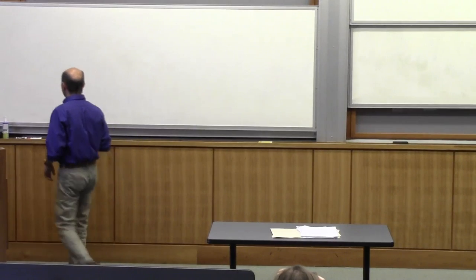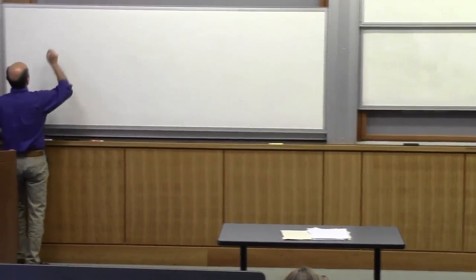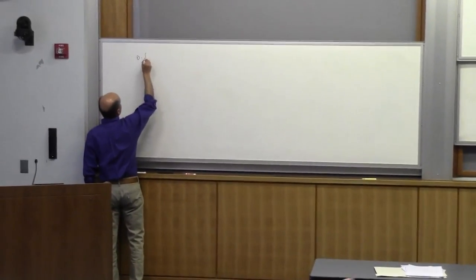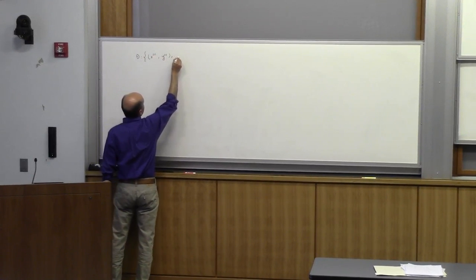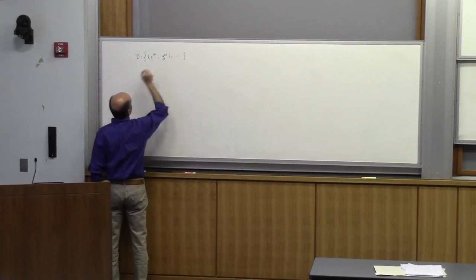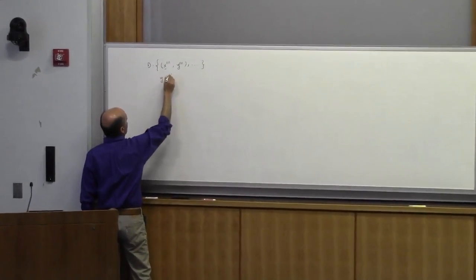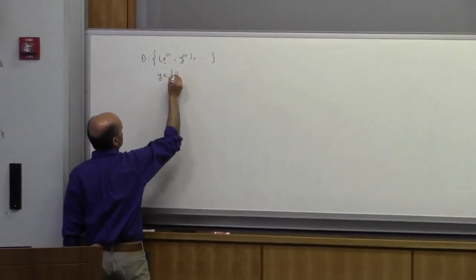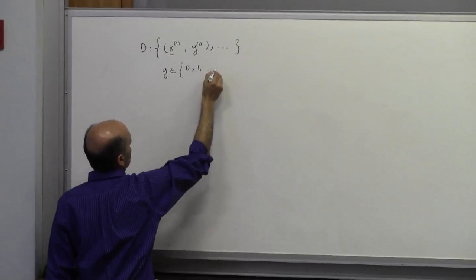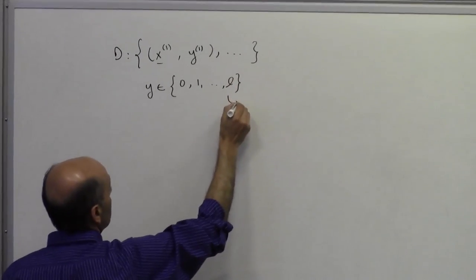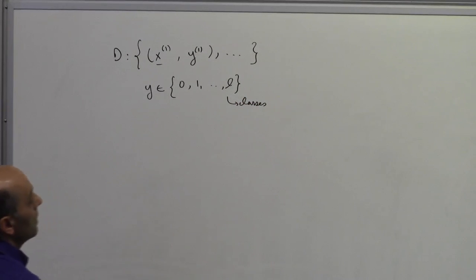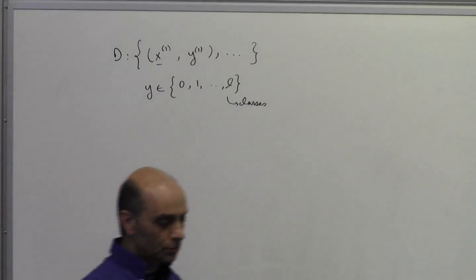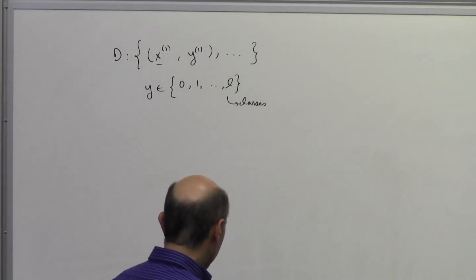To start off, let's go over what we have as our data. We have some vectors x, and we have some labels y, and we have n of these. These y's belong to some classes — maybe 0, 1, up to l — so L number of classes. Our objective is to build a model that can allow us to dissociate between the various classes.